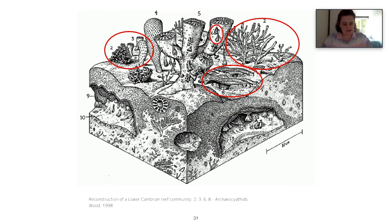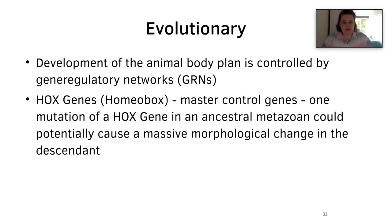Another ecological factor to consider is the existence of ecosystem engineers — the modification of an abiotic environment by a species that creates, modifies, or destroys the niches of other species. An example today would be a coral reef, and back in the Cambrian would have been an archaeocyathid reef. A few examples of archaeocyathids are circled in red in the diagram here.